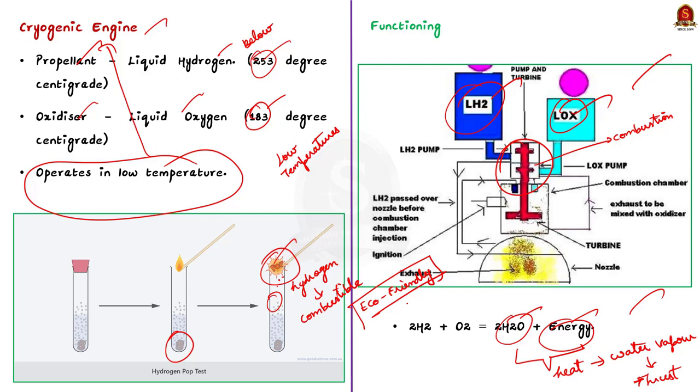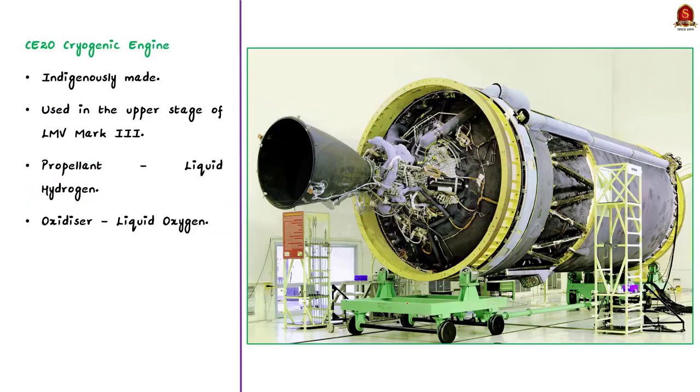Now let's see some points about CE20 cryogenic engine of ISRO. CE20 is an indigenously developed cryogenic engine. The CE20 cryogenic engine is the one that powers the launch vehicle Mark III, which we shortly call LMV3.